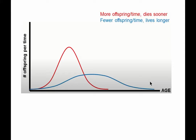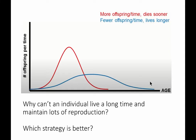We cannot produce lots of offspring over a long lifespan — it's too energetically taxing. So we can either produce more offspring in a shorter amount of time and die sooner, or produce fewer offspring and live longer. Which strategy is better — the red line, the steep one, or the blue line? We can calculate the area under these two curves, and the area is exactly the same. Therefore, the number of offspring produced over a lifetime is the same — these are equally successful strategies. Which one is appropriate depends on the niche of a species.